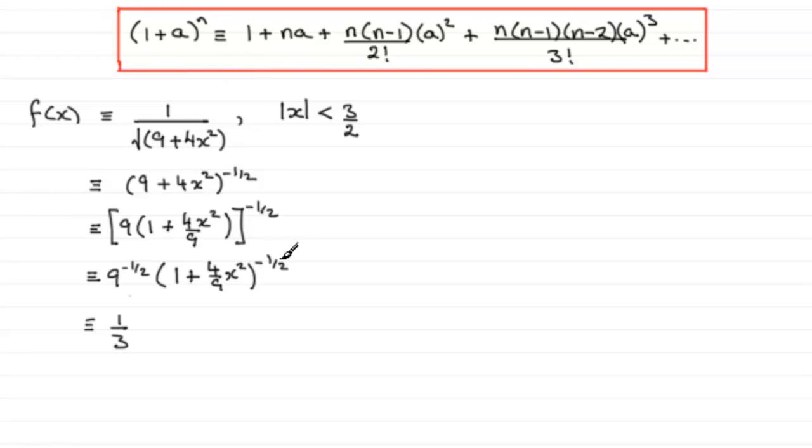So we can expand this now using the binomial expansion formula. So we've got 1/3, and we can go straight in now and expand this. So we're going to get 1 + n, the power -1/2, times a, a being 4x²/9.